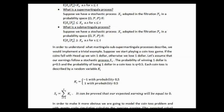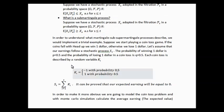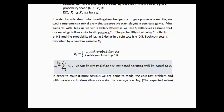Otherwise, we lose $1. Let's assume that our earnings follow a stochastic process S. The probability of winning $1 is equal to 50% and the probability of losing $1 in a coin toss is equal to 50%. Each coin toss is described by a random variable K. This coin toss game is described as a fair game, where we lose with probability p equal to 0.5 or win with probability 0.5 again. The earnings could be described by a stochastic process S, which is simply the sum of all the random variables in each coin toss.